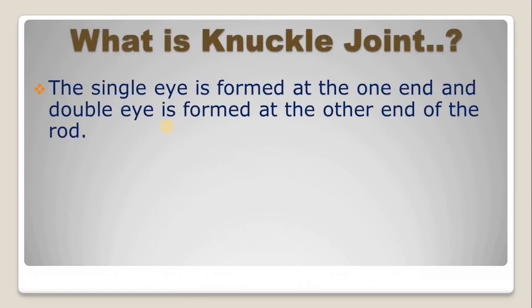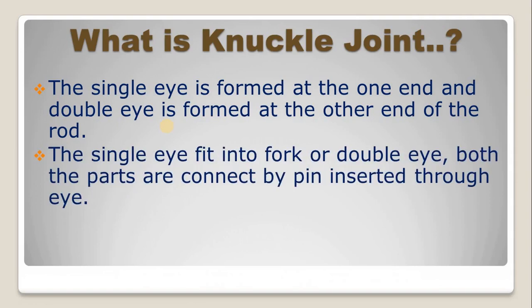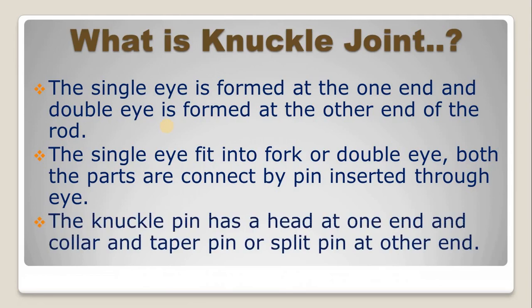The single eye is formed at one end and the double eye is formed at the other end of the rod. These are two different rods which are connected together, so at one end of one rod you are forming a single eye and a fork or double eye is formed at the end of another rod. These rods are connected together by means of a pin. The single eye fits into the fork or double eye, and both parts are connected by a pin inserted through the eyes.